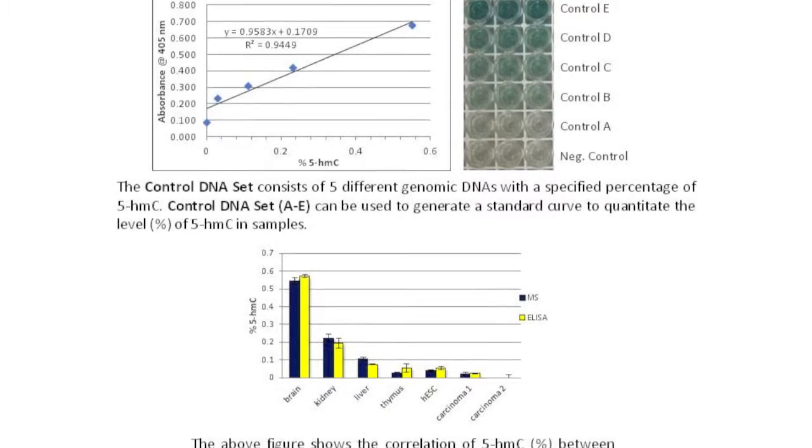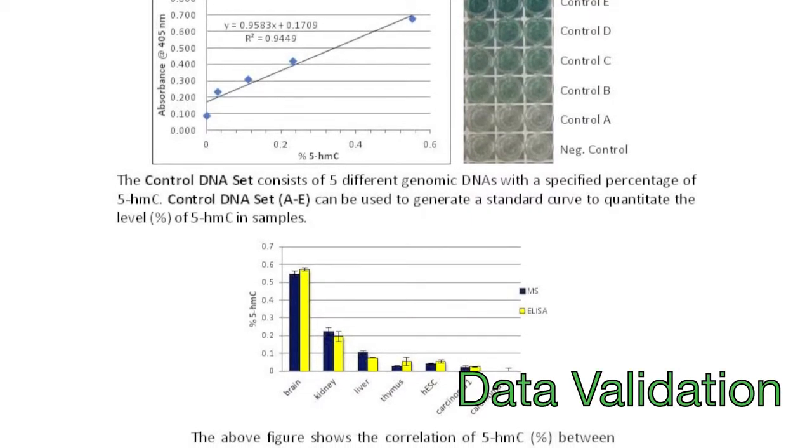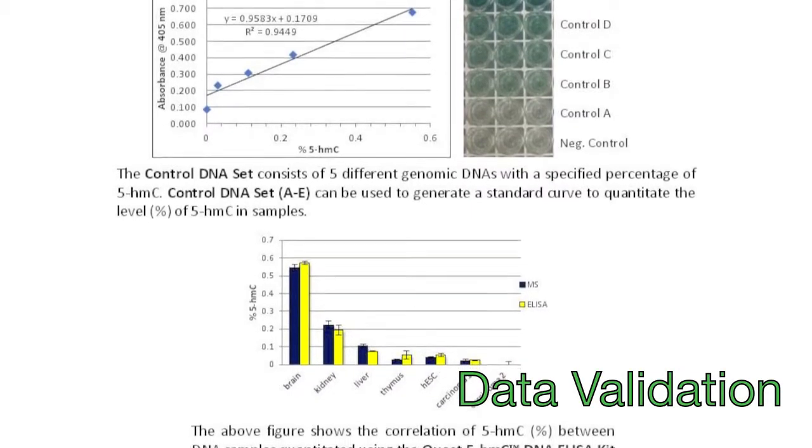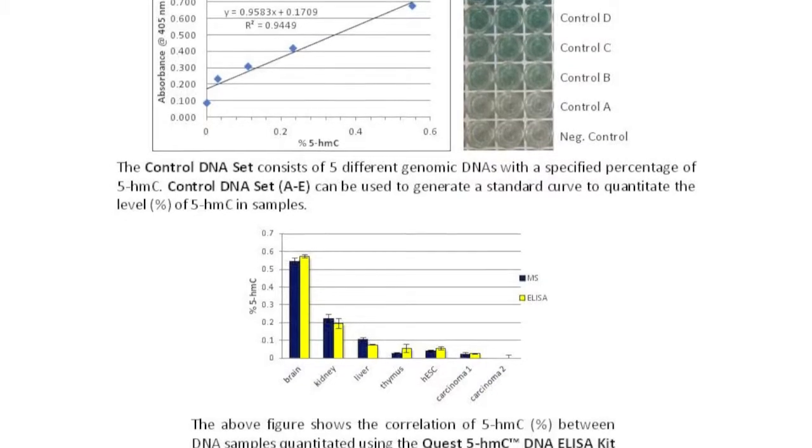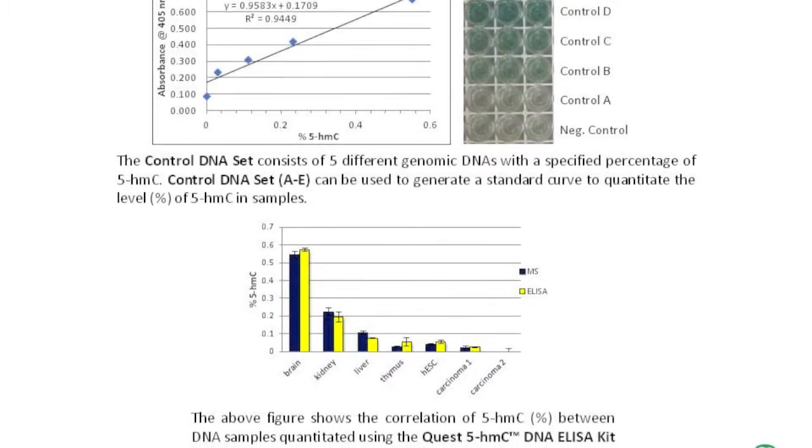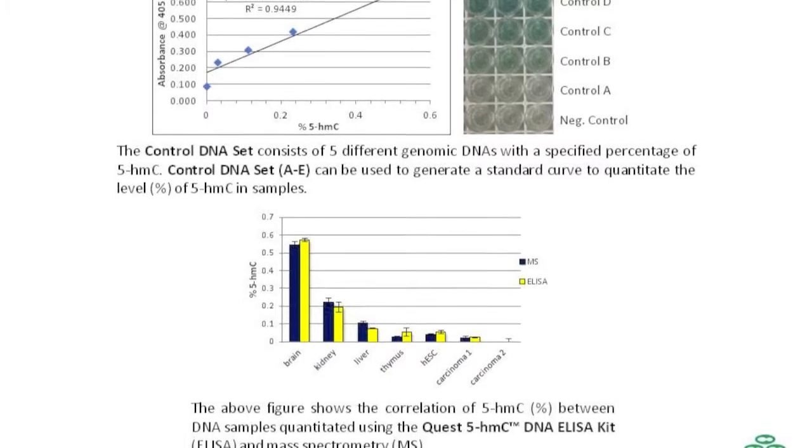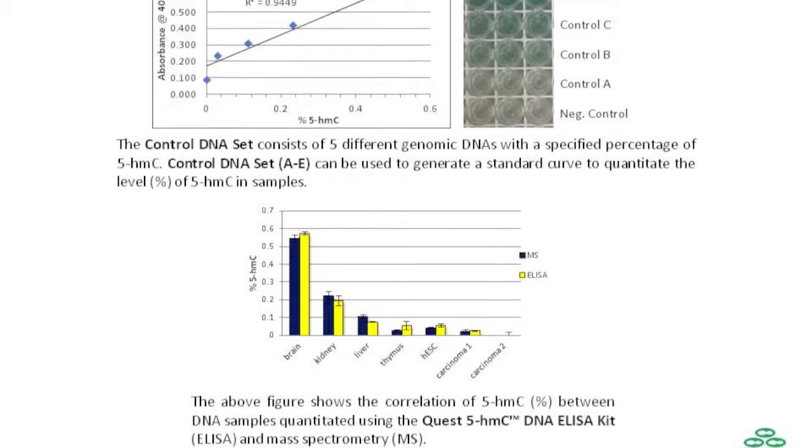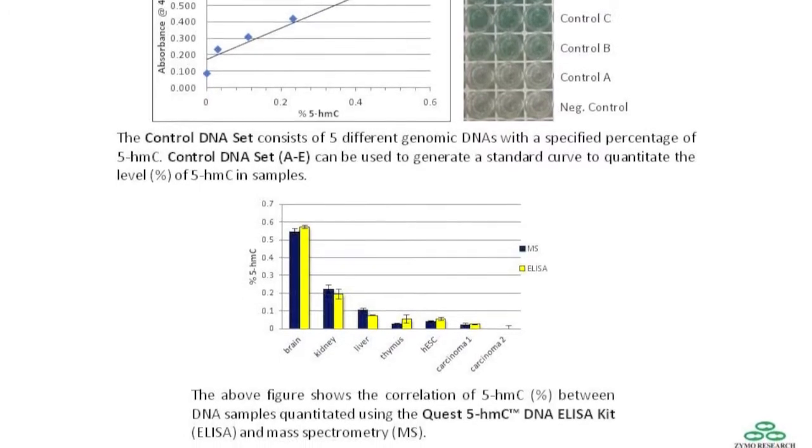The image below shows the similarity in percent 5-HMC in DNA samples quantified using either the Quest 5-HMC DNA ELISA kit or by mass spectrometry. As you can see, the kit is very useful in obtaining accurate 5-HMC percent levels.